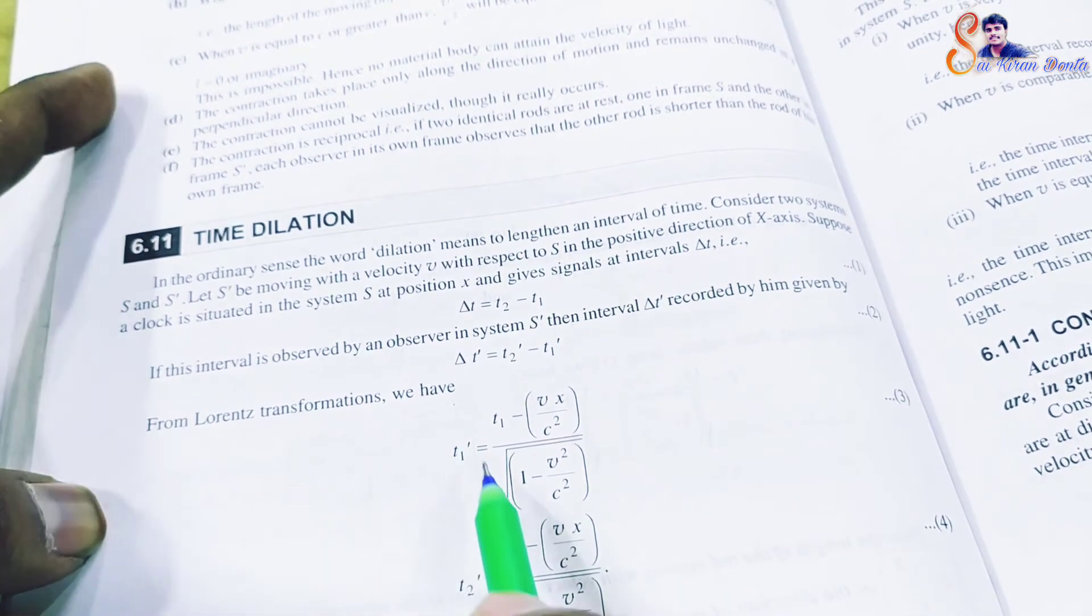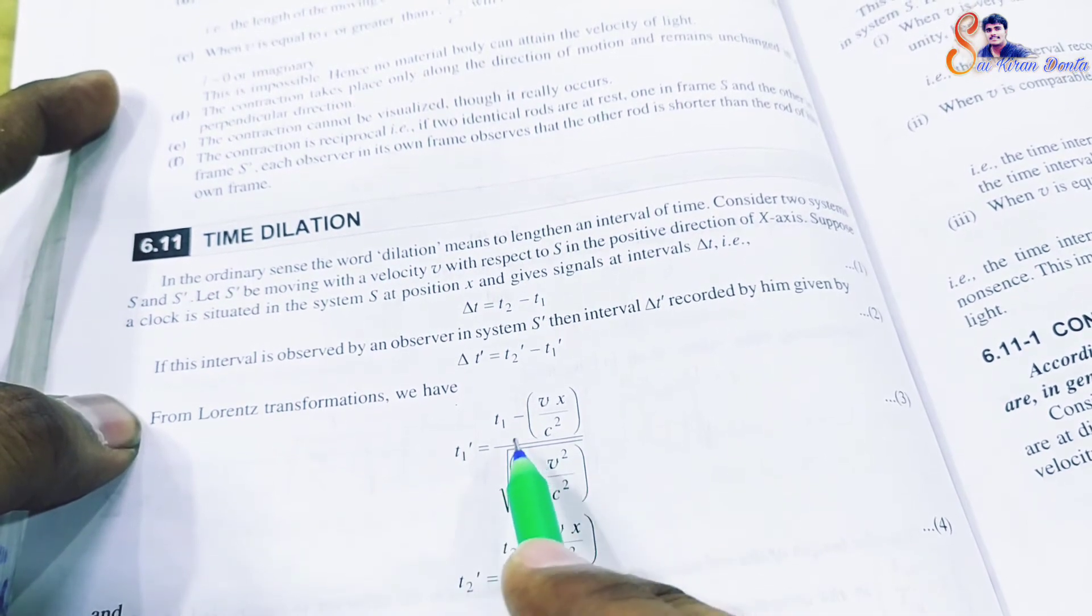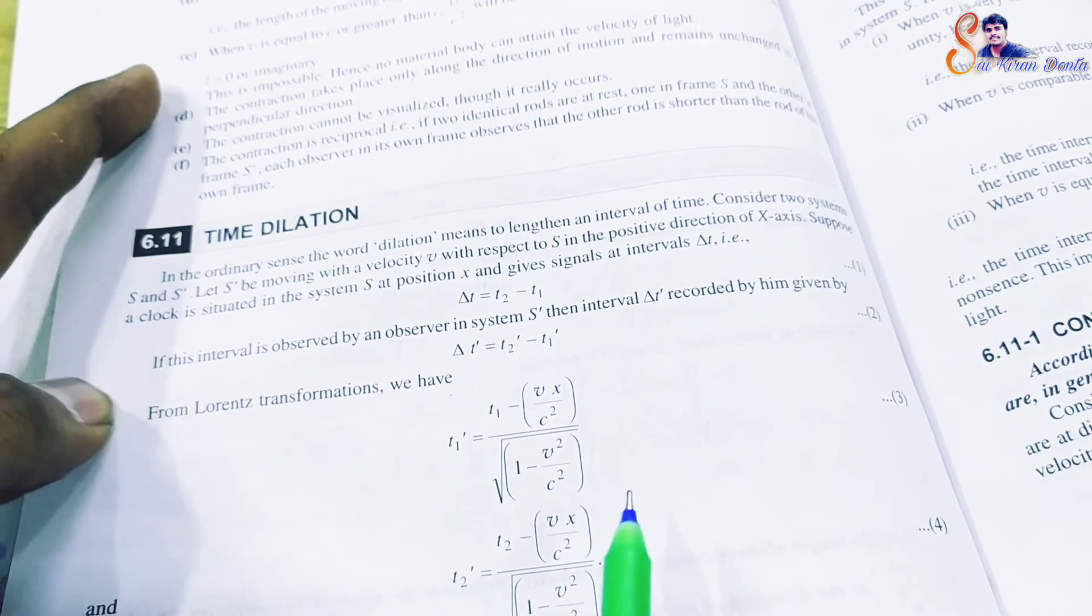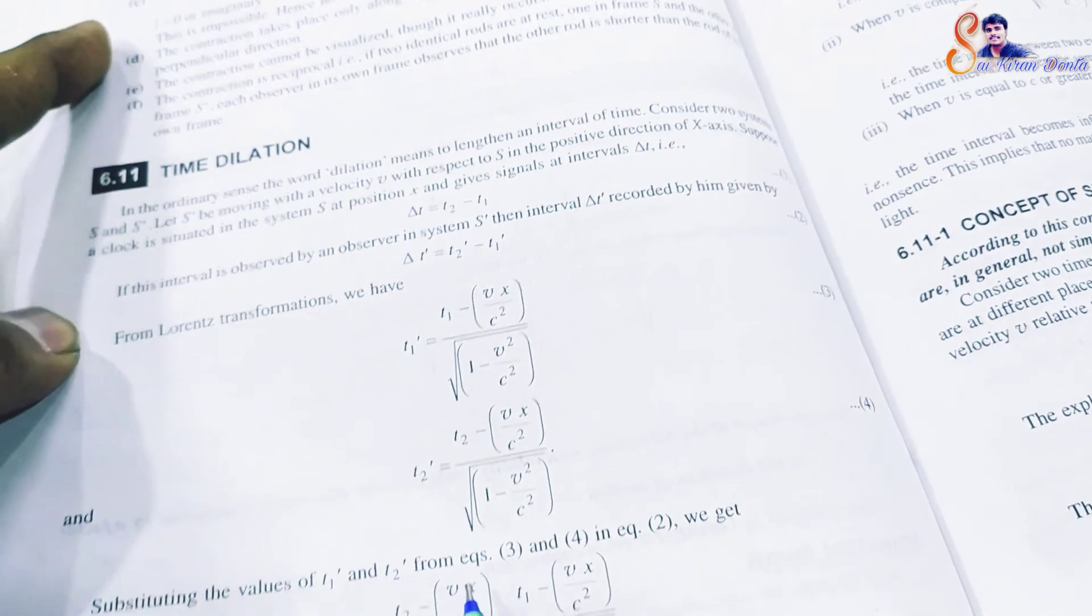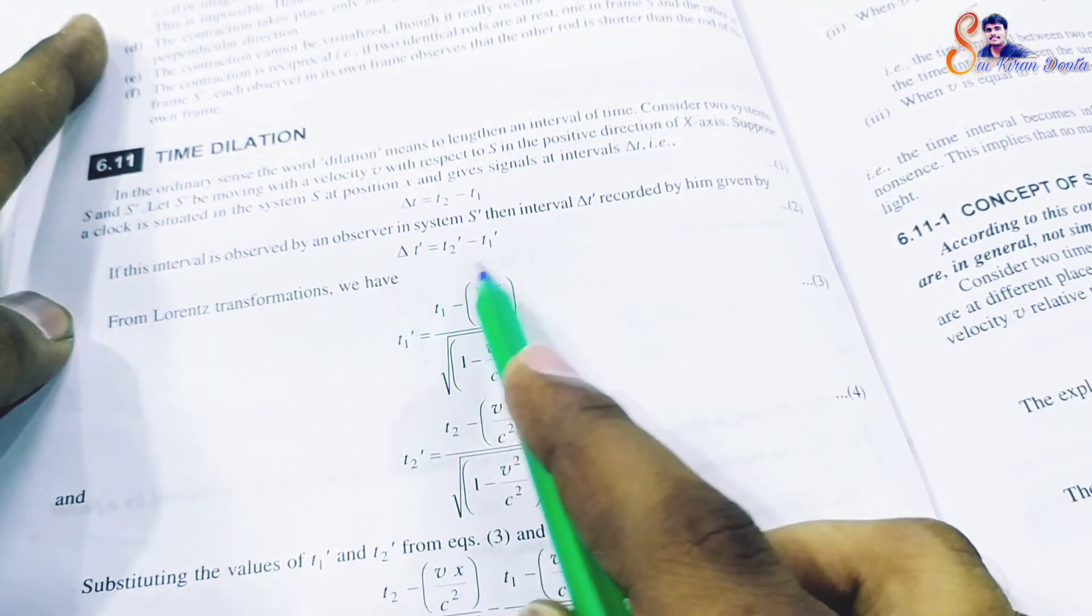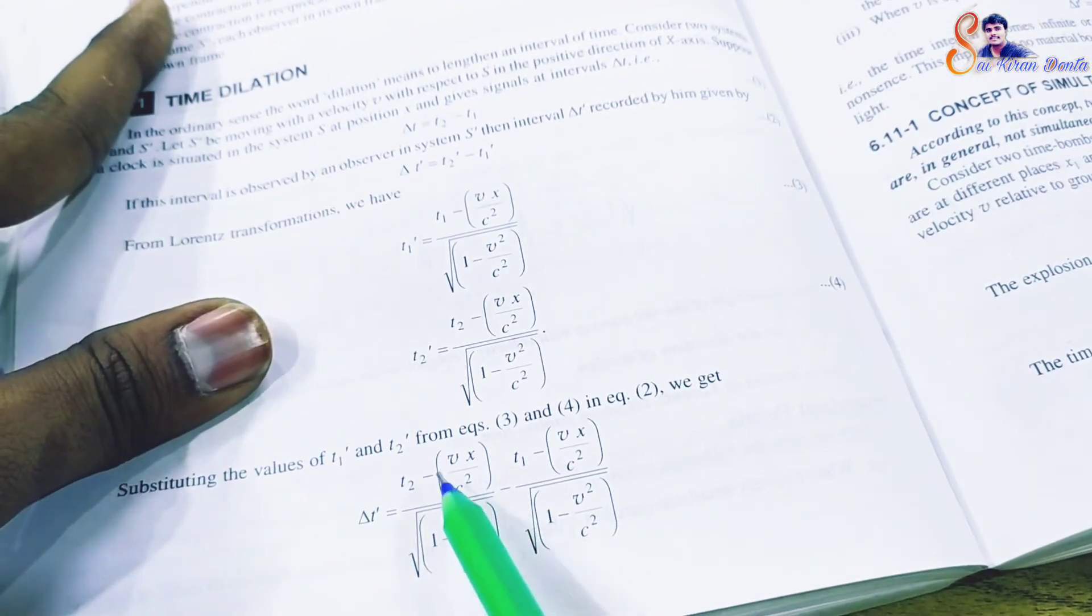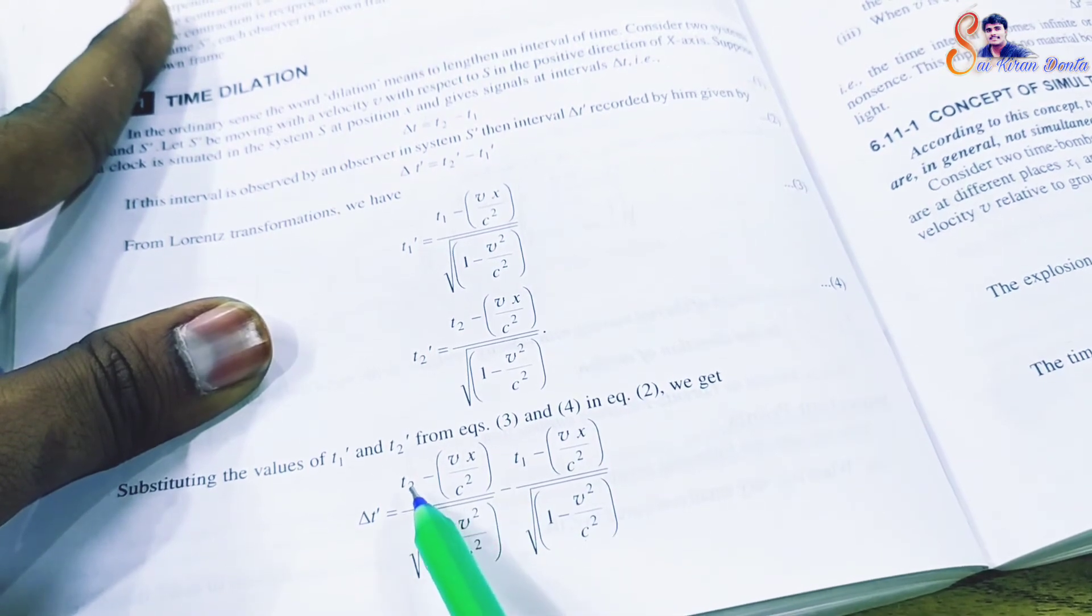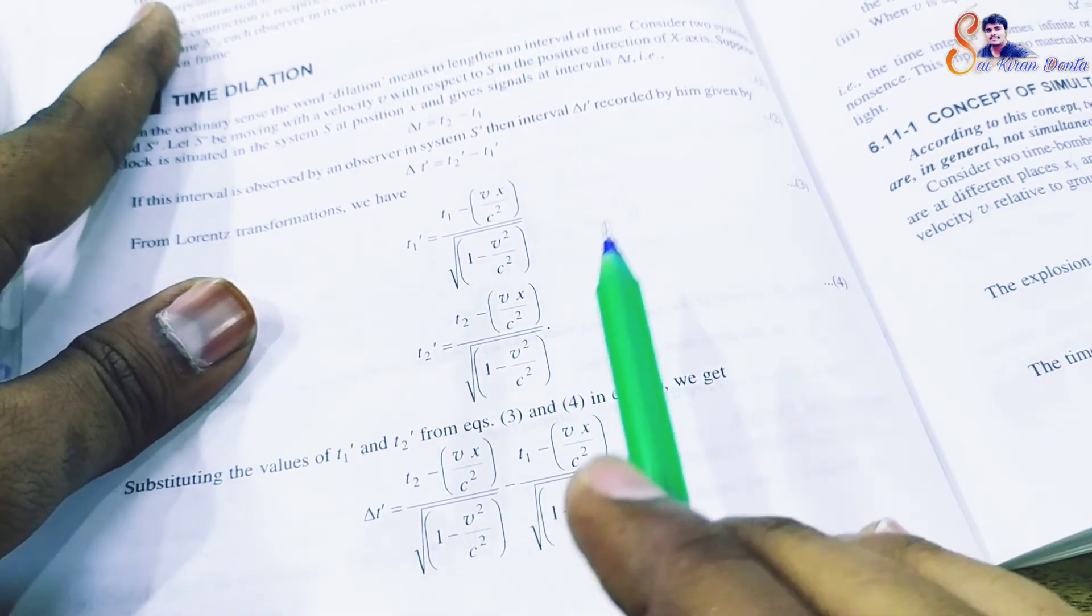Using Lorentz transformations, t1 dash equals t1 minus vx by c squared divided by square root of 1 minus v squared by c squared, and similarly for t2 dash. Substituting these values and canceling terms, we get delta t dash equals t2 minus t1 divided by square root of 1 minus v squared by c squared.